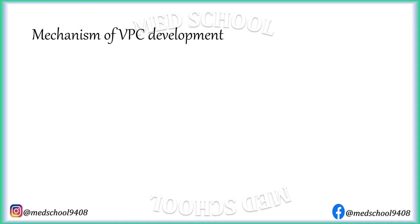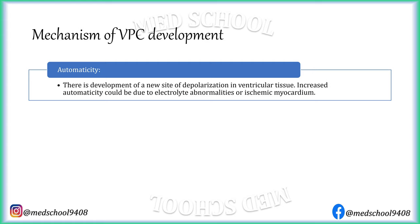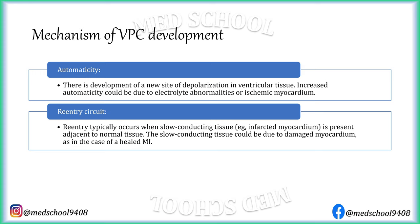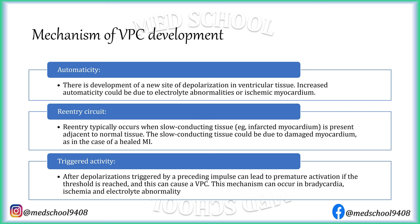The mechanism of VPC development can be of three types. In automaticity, there is development of a new site of depolarization in ventricular tissue; increased automaticity could be due to electrolyte abnormalities or ischemic myocardium. Reentry typically occurs when slow conducting tissue, such as infarcted myocardium, is present adjacent to normal tissue. In cases of triggered activity, after-depolarization triggered by a preceding impulse can lead to premature activation if the threshold is reached, and this mechanism can occur in bradycardia, ischemia, and electrolyte abnormalities.